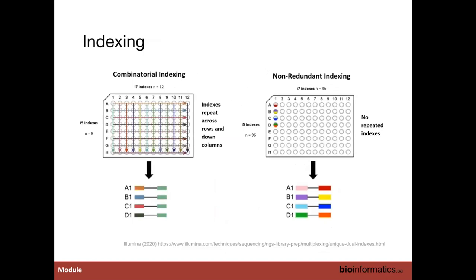Once we've isolated the cells into an array of wells, the next step is to index them. Two types of indexing are shown here. Combinatorial indexing involves a unique barcode per row and another unique barcode per column, such that each unique pair of barcodes uniquely specifies the cell's location within the set of wells. There's also non-redundant indexing in which every well has a completely unique pair.